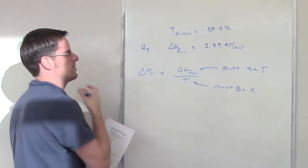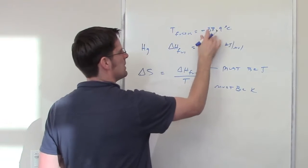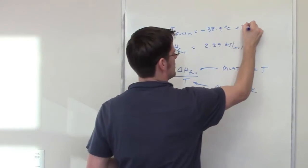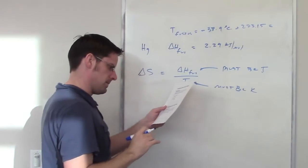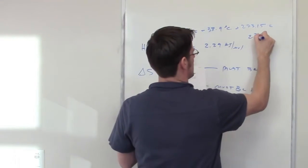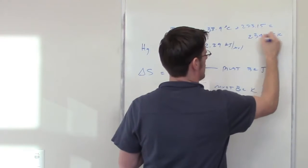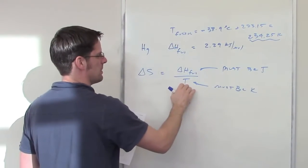And obviously we're not quite there yet, so we're going to take this negative 38.9 and add 273.15 to convert it to kelvins. That comes out to be 234.25 kelvin, so that is my temperature that goes in the denominator.